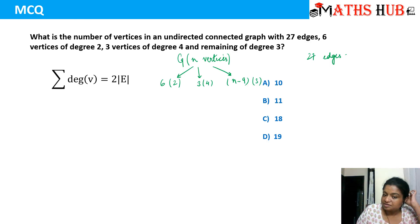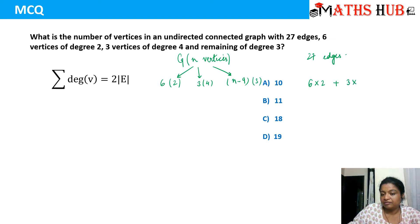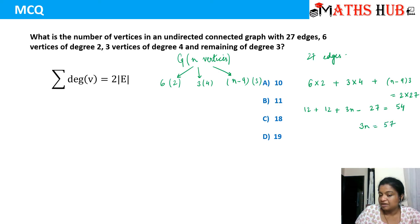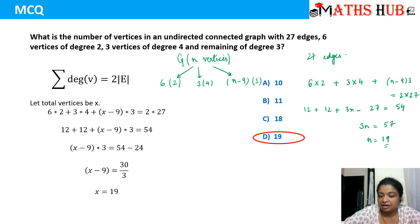Applying the handshaking lemma: the sum of all degrees equals 2 times the number of edges. So: (6×2) + (3×4) + (n−9)×3 = 2×27. This gives 12 + 12 + 3n − 27 = 54, so 3n − 3 = 54, meaning 3n = 57, and n = 19. The correct answer is 19.